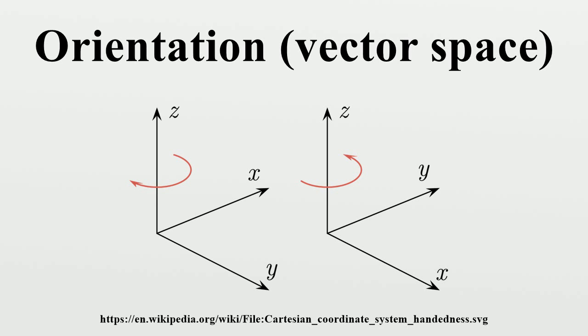The set of ordered bases of the zero-dimensional vector space has one element, and so there are two maps from this set to {±1}. A subtle point is that a zero-dimensional vector space is naturally oriented, so we can talk about an orientation being positive or negative.